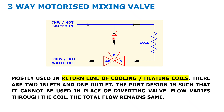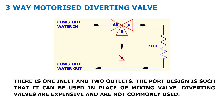A three-way motorized mixing valve is placed on the return side of a coil. When heating or cooling is not required, water is mixed back into the return; when it is required, water flows directly through the coil. A diverting valve is placed at the inlet of the coil, diverting water directly to the chilled or hot water return header when temperature is not required, and directing water through the coil when demand exists.